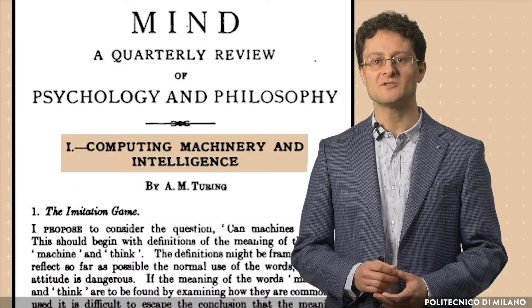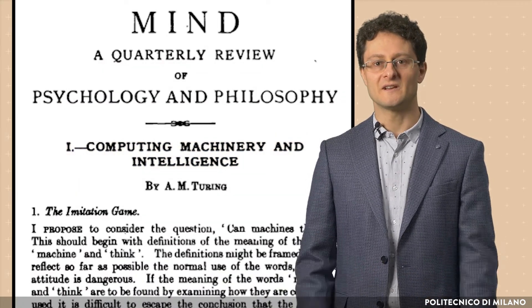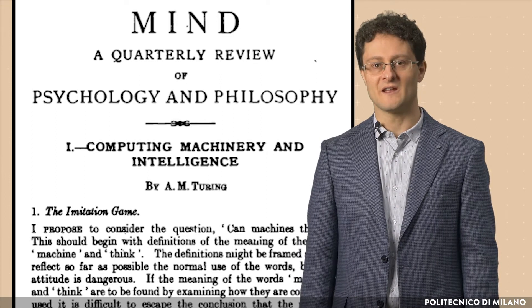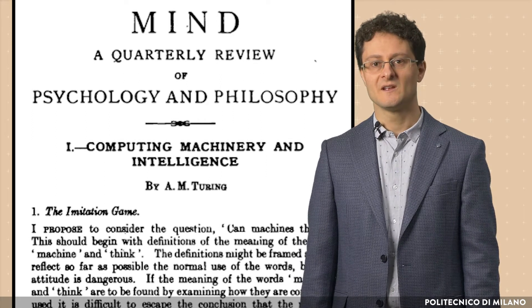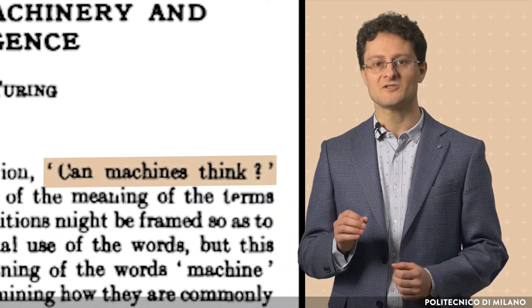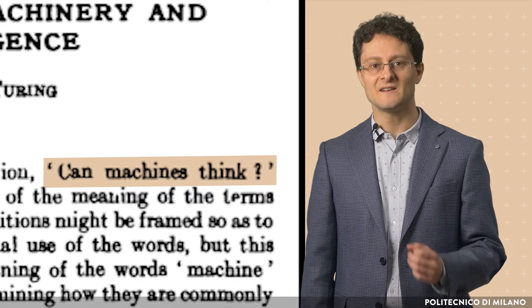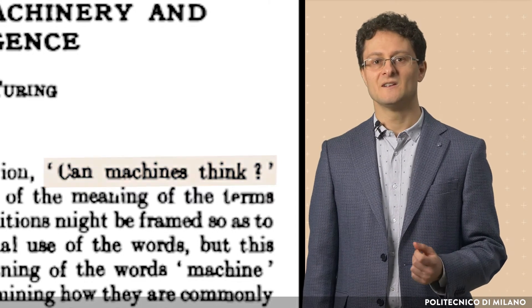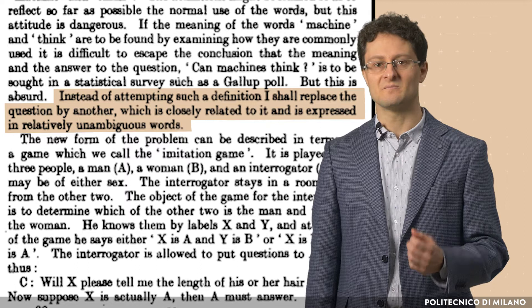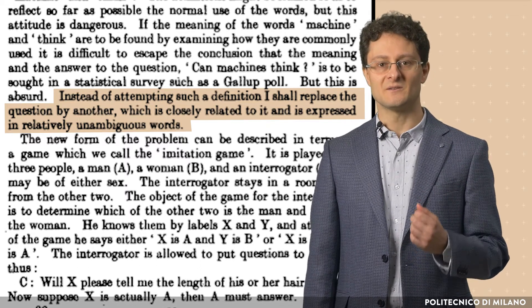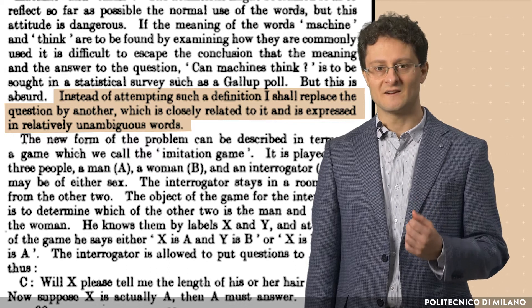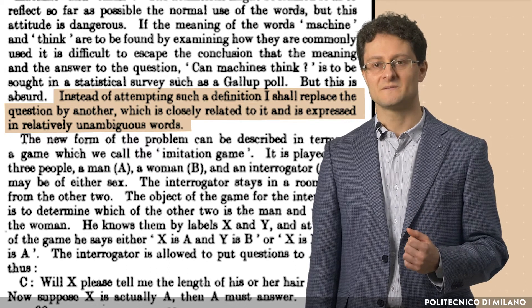In 1950, in his paper titled Computing Machinery and Intelligence, Alan Turing introduced a test that today is commonly known as the Turing test. Turing was focusing on the question, can machines think? However, since thinking is difficult to define, Turing suggested replacing this question with another, which is closely related to it and expressed in relatively unambiguous words. Alan Turing formulated a new form of the problem in terms of a three-person game called the imitation game.